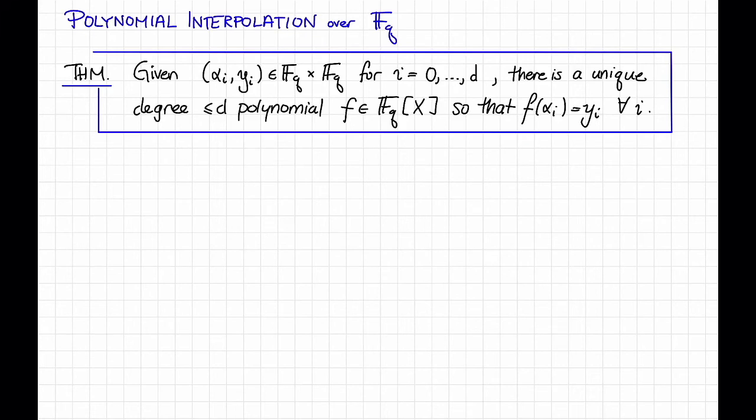Those facts about Vandermonde matrices imply the very useful fact that polynomial interpolation quote-unquote works over f_q. So what do I mean by that? Here's a theorem. Suppose we are given d+1 pairs, (alpha_i, y_i), for i = 0 up to d, and think of these as pairs of evaluation points and values. Then there's a unique polynomial of degree at most d, called F, so that F(alpha_i) = y_i for all i = 0 up to d.